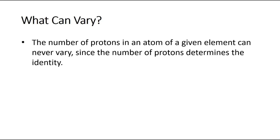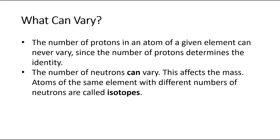What can vary within an atom of a given element? The number of protons in an atom of a given element can never vary, because the number of protons determines its identity — carbon will always have six protons, or else it's not carbon. But the number of neutrons can vary, and that will affect the mass of an atom. For example, there is a carbon with a mass of 12, a carbon with a mass of 13, and a carbon with a mass of 14. Those differing masses are based on different numbers of neutrons. Atoms of the same element with different numbers of neutrons and therefore different masses are called isotopes.